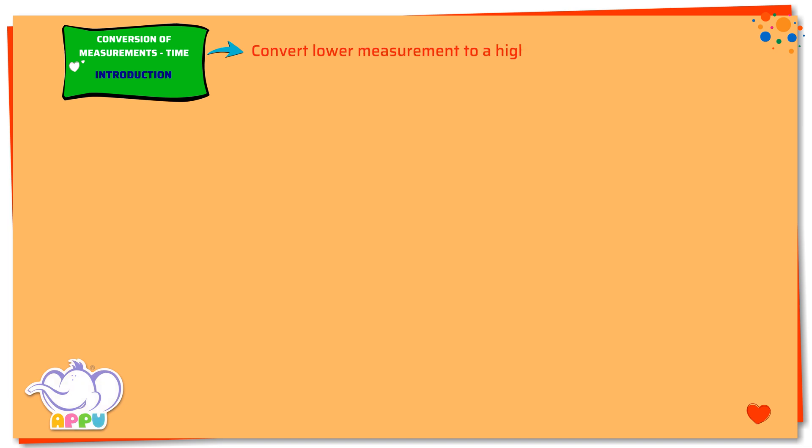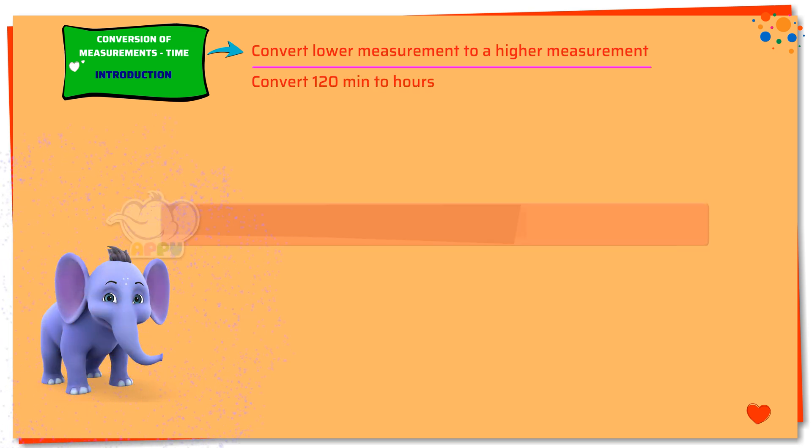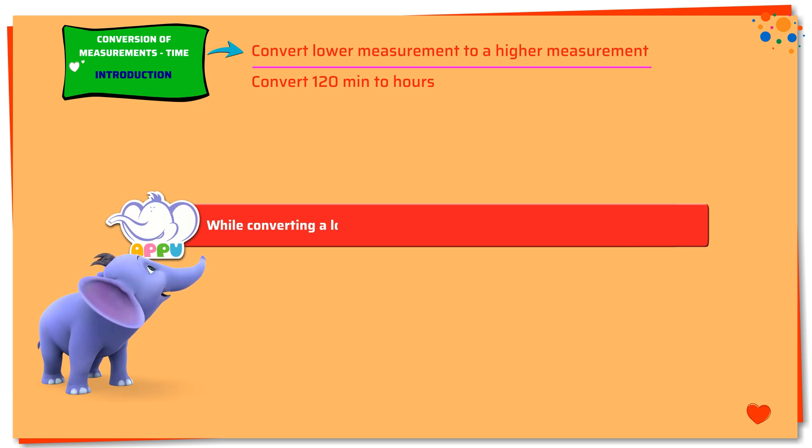Convert lower measurement to a higher measurement. Convert 120 minutes to hours. While converting a lower measurement to a higher measurement, we divide.